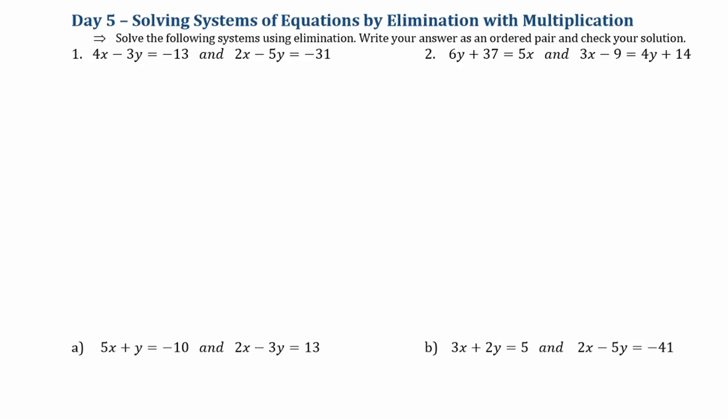In our Day 4 video, we saw that we can solve systems of equations using a process called elimination by taking the same variable with opposite coefficients and adding the two equations together to eliminate that variable. But here we have two variables whose coefficients are not opposites. So I have to pick one of them and find a way to multiply that equation by something to get that coefficient to be the opposite of the coefficient in the other equation.